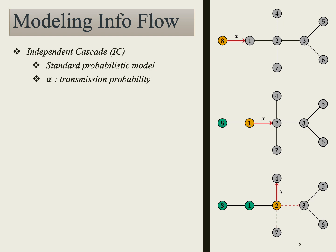In our scenario, node 8 is the source of information and transmits to its neighbors with probability alpha. Let's say node 1 receives the information from node 8. Once node 8 stops transmitting, node 1 starts spreading. In the next turn, suppose node 2 receives the information, and then node 2 starts spreading the information.